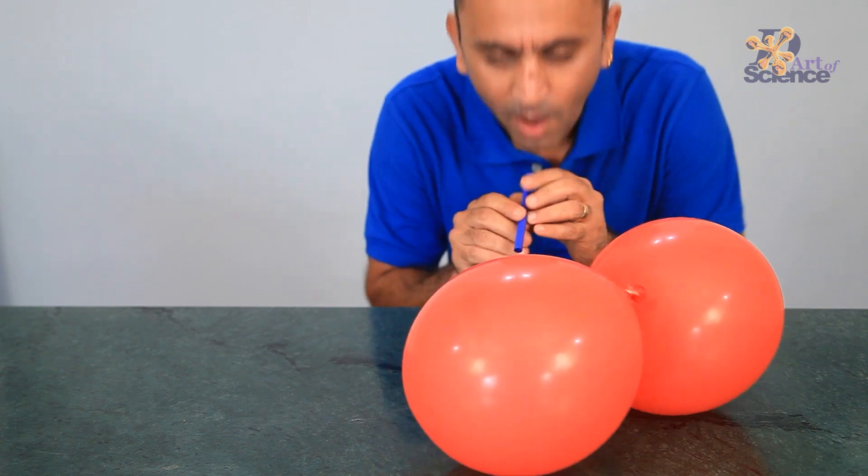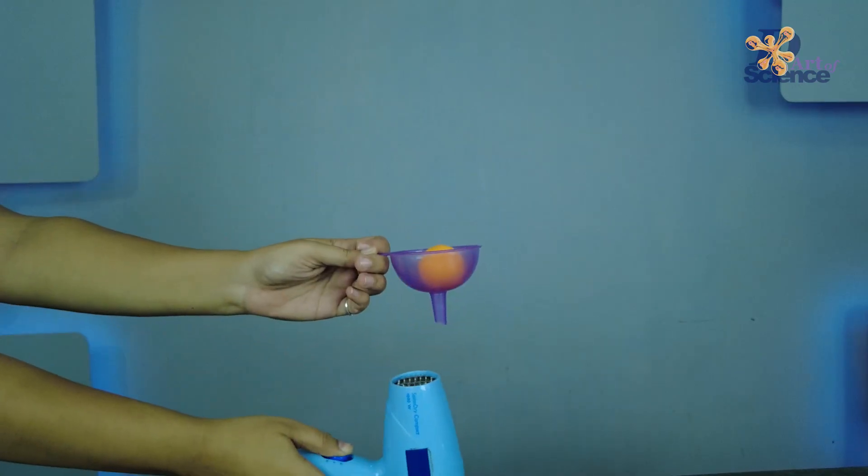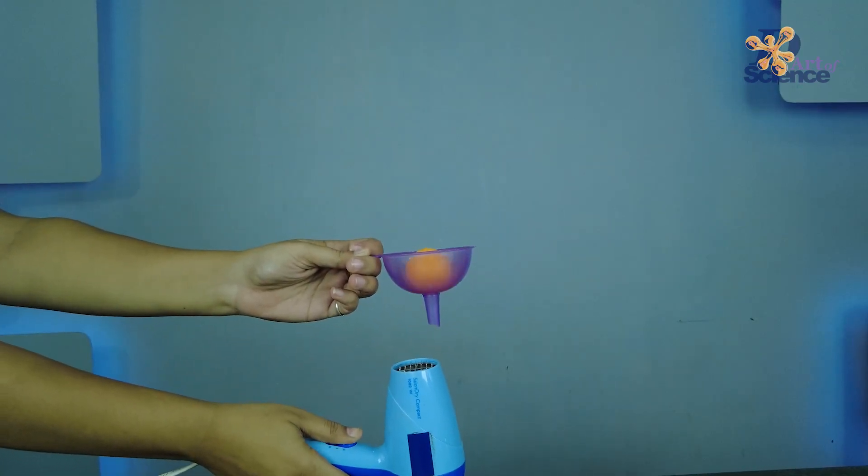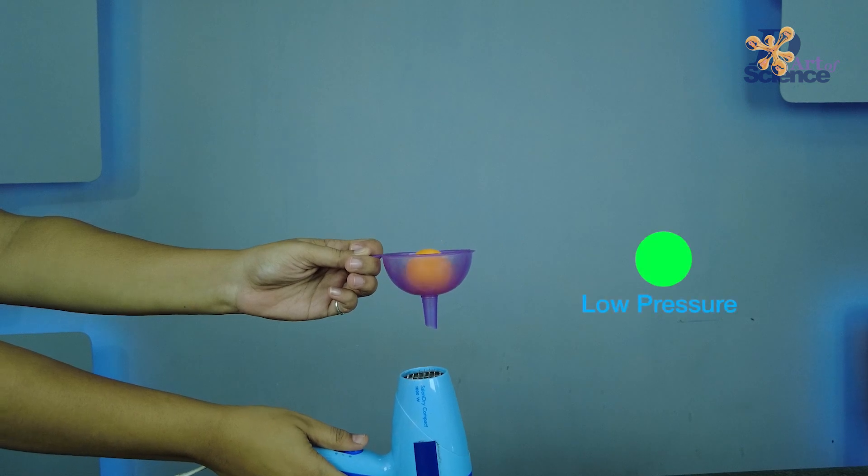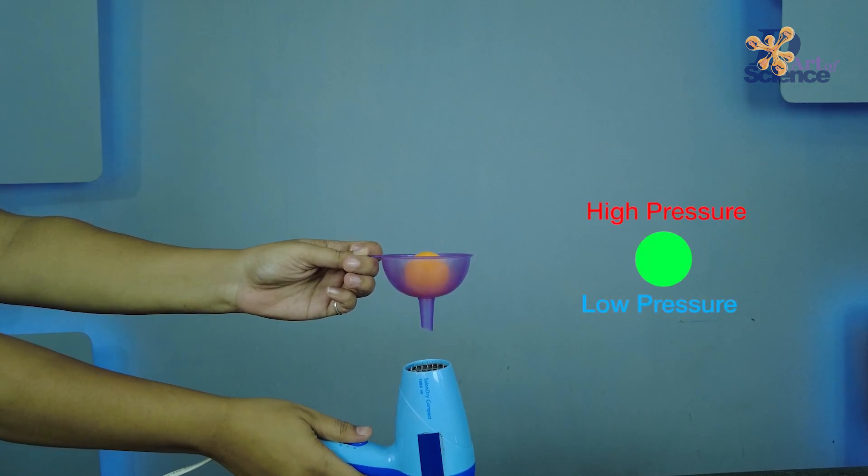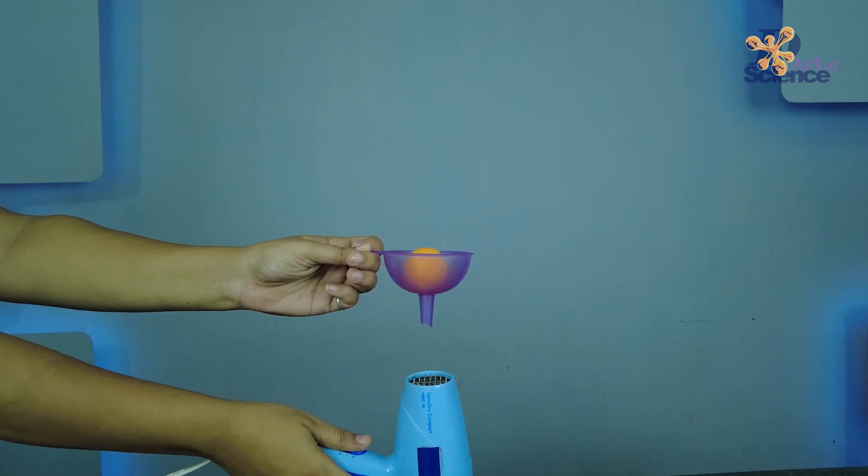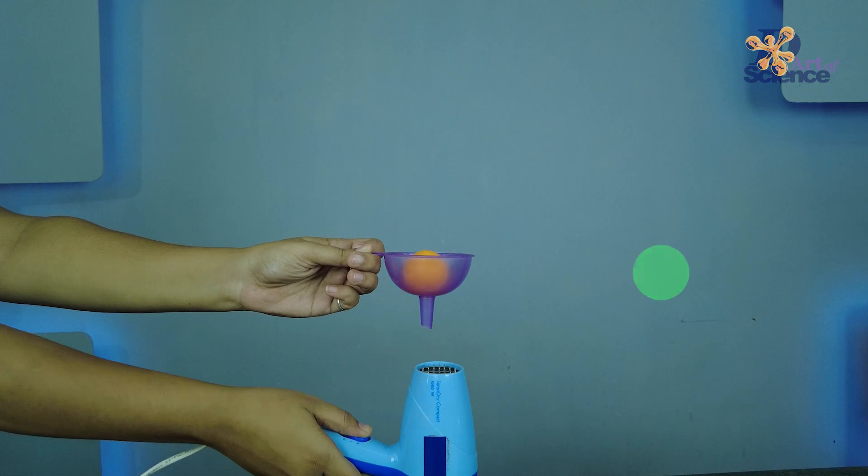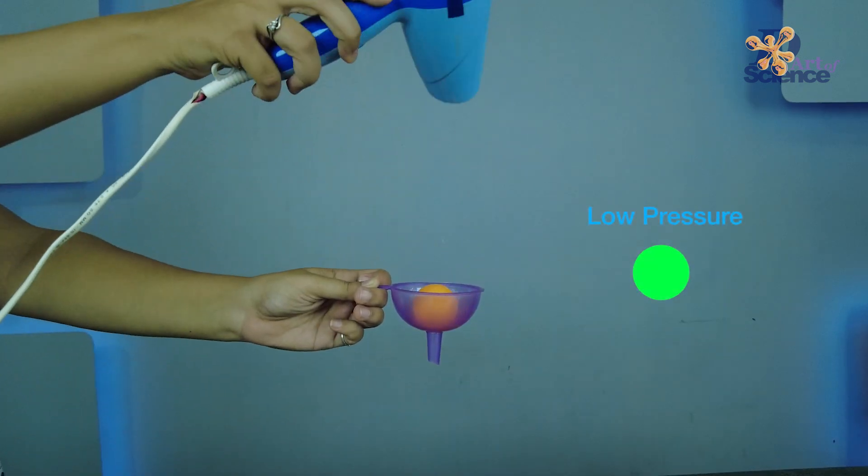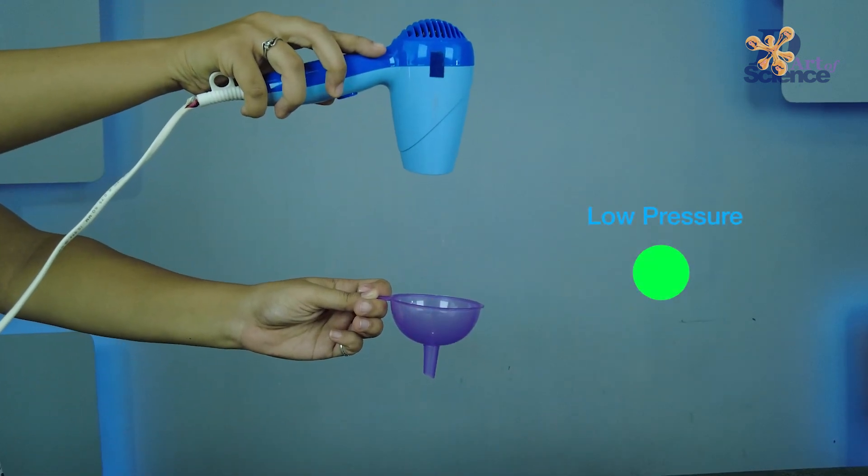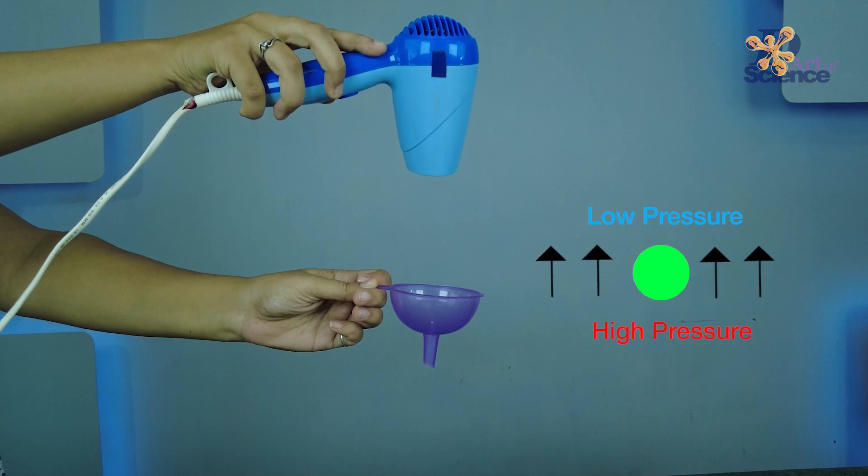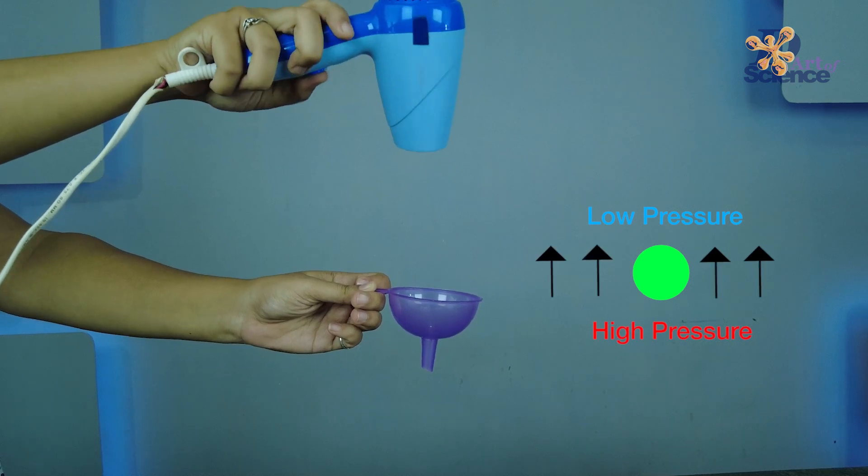This is exactly what happened in the funnel too. When we blew air from down, we created a lower air pressure under the ball. And so, the high pressure air from the top of the ball kept pushing the ball back down into the funnel. But when we blow air from the top, we created a low air pressure on the top of the ball. Now, the relative high pressure underneath the ball pushes it upwards.